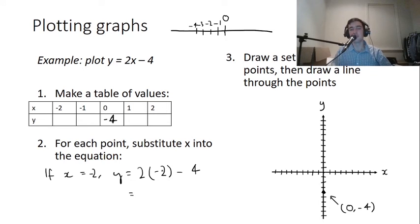2 times negative 2. Now, if you've got a positive number times a negative number, so positive times a negative, the answer has to be negative. So, it's just like 2 times 2, except it's negative. So, it's 4, but it's not really 4, it's negative 4. So, we've got negative 4 minus 4.